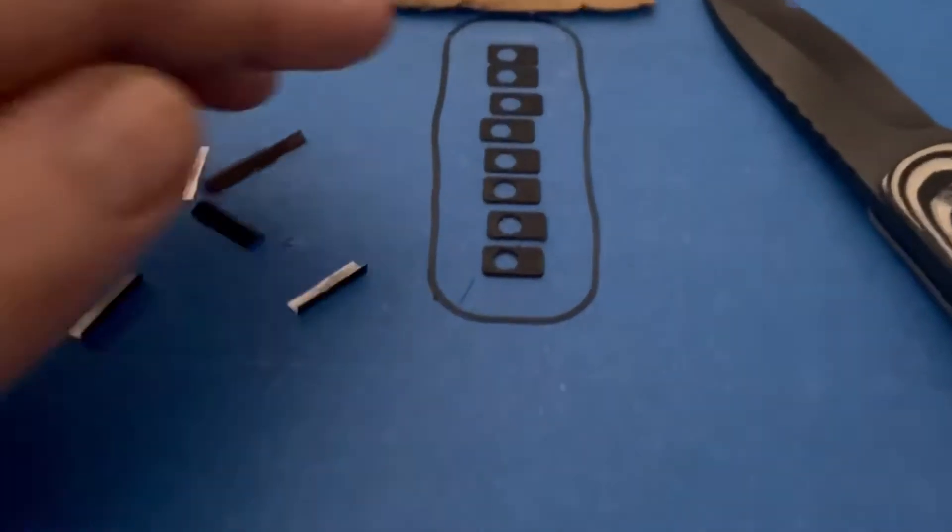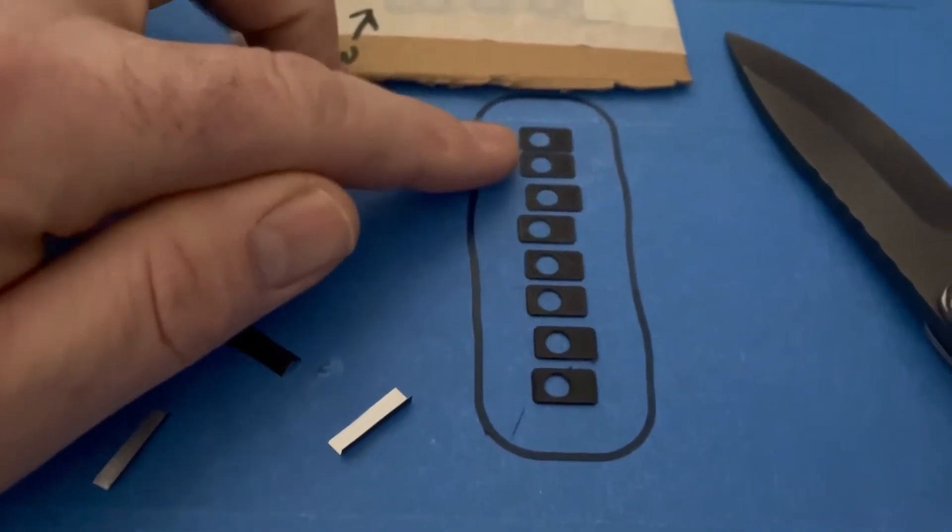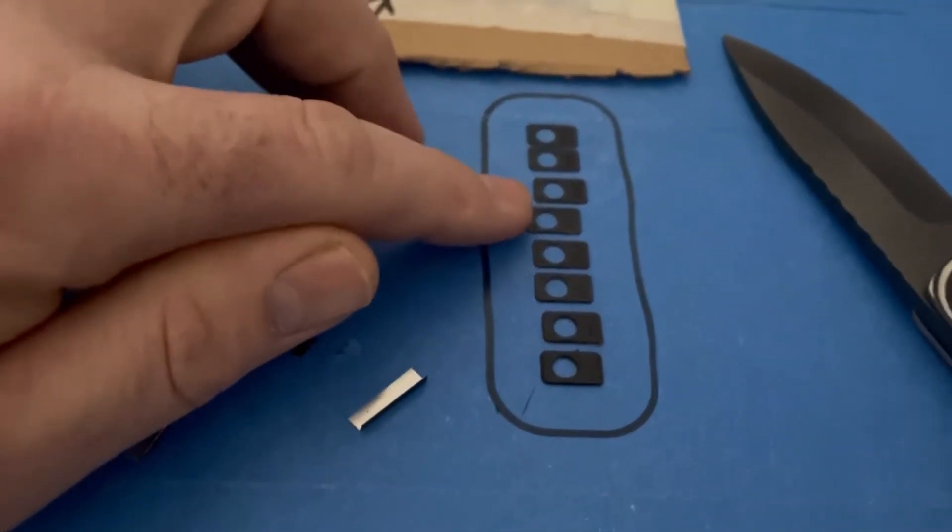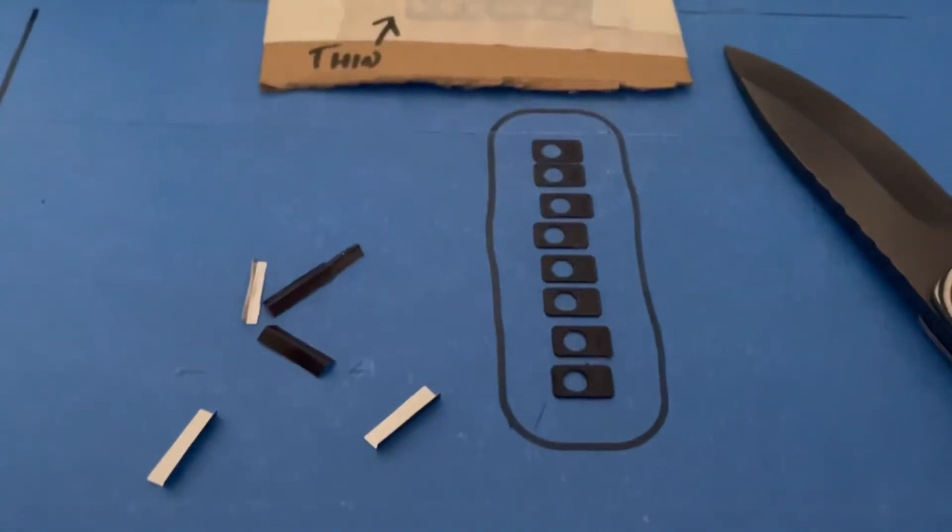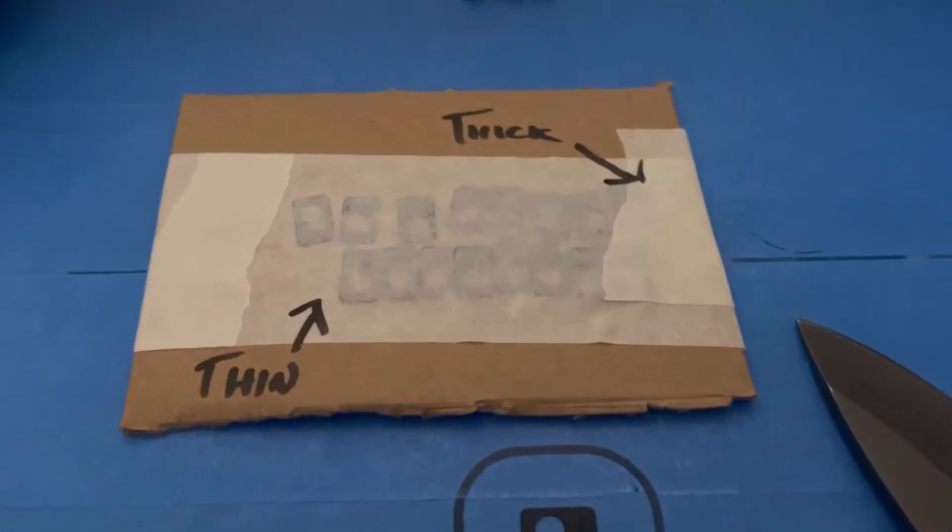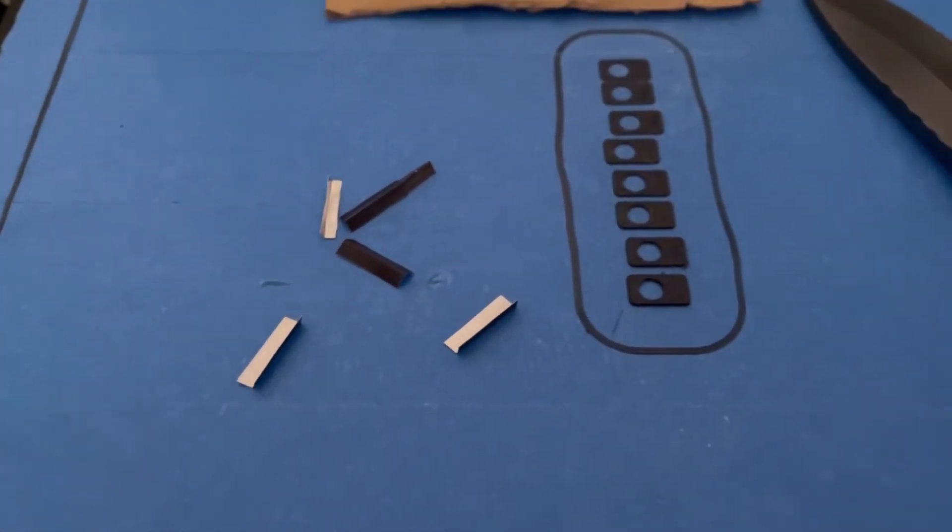Alright, this is the shim pack. It goes from the thinnest to the thickest: 0.5, 0.6, 0.7, 0.8, 0.9, 1 mil, 1.1 mil. Now I put two sets in yours, you don't need two sets, you only need one set. And these are the side shims, we'll get on to them in a minute.